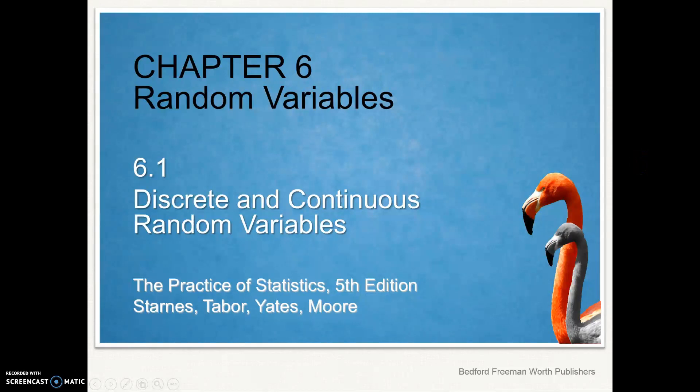Hello AP Stats Fanatics. We're going to start to take a look at chapter 6 on random variables, and specifically 6.1. We'll cover the first half of this section. In this video we'll just talk about discrete and continuous random variables, but specifically we'll just be talking about discrete random variables in the first half of this presentation.